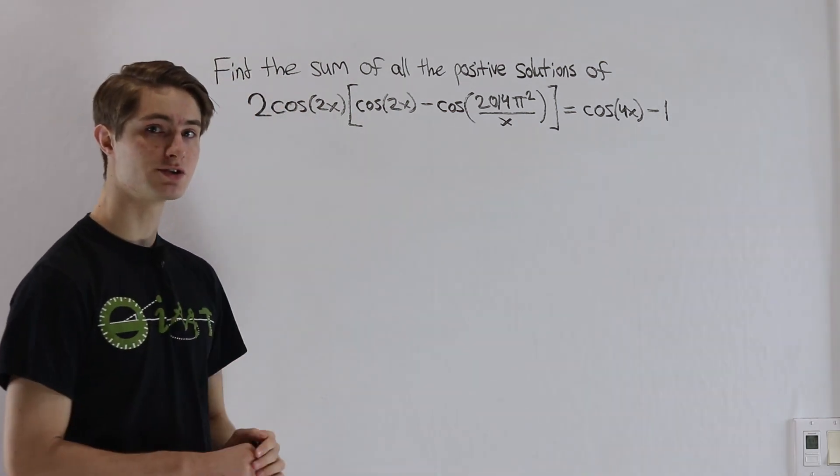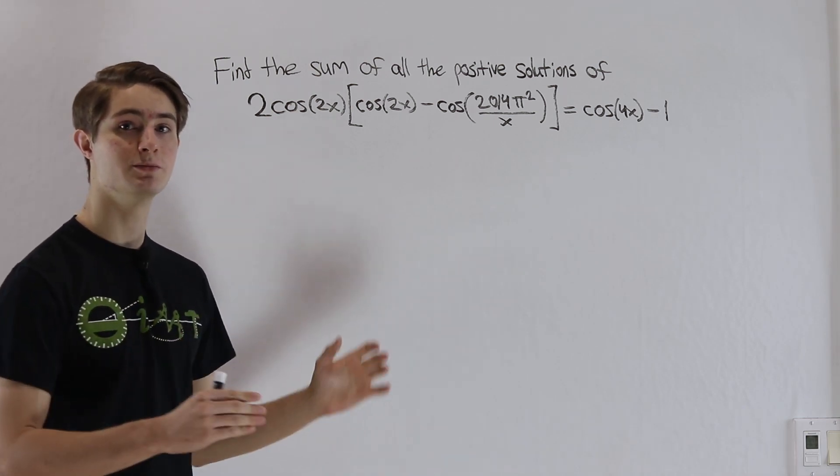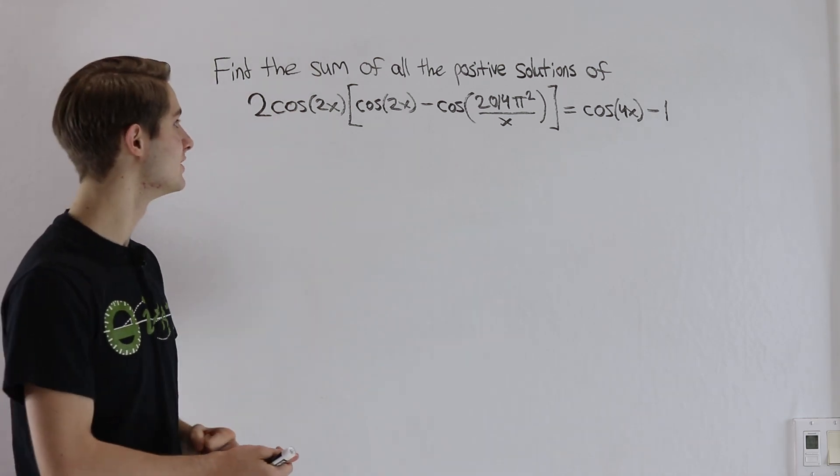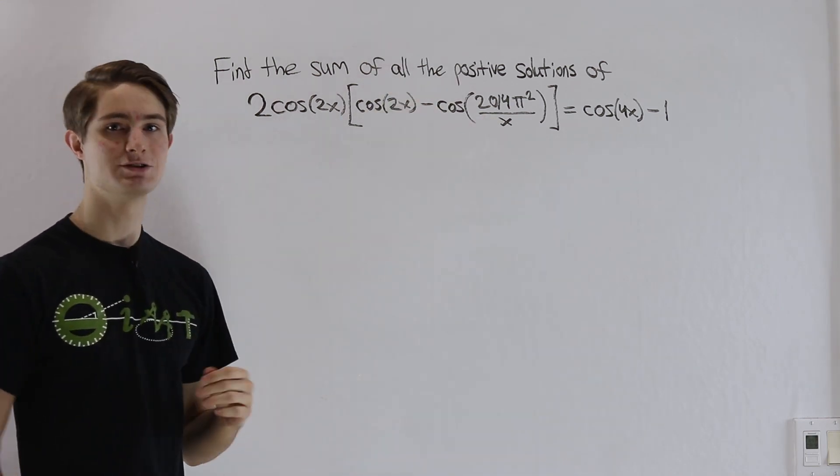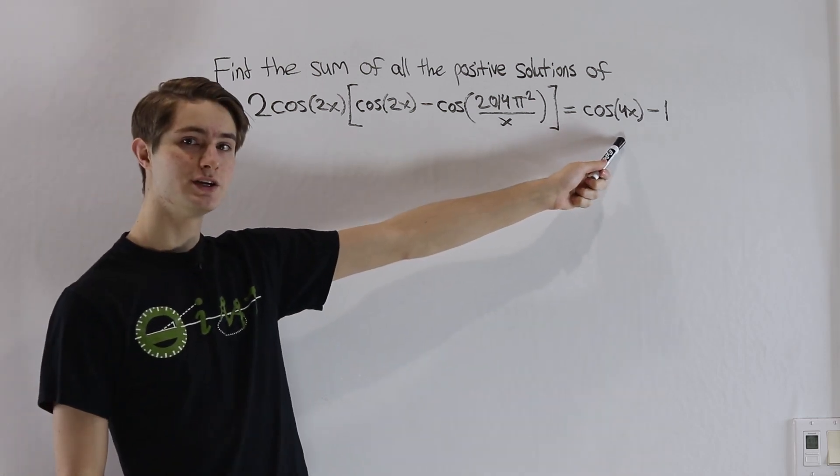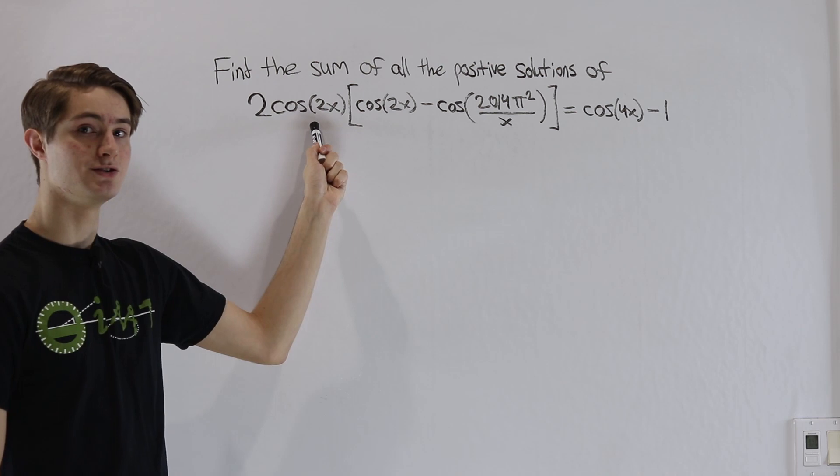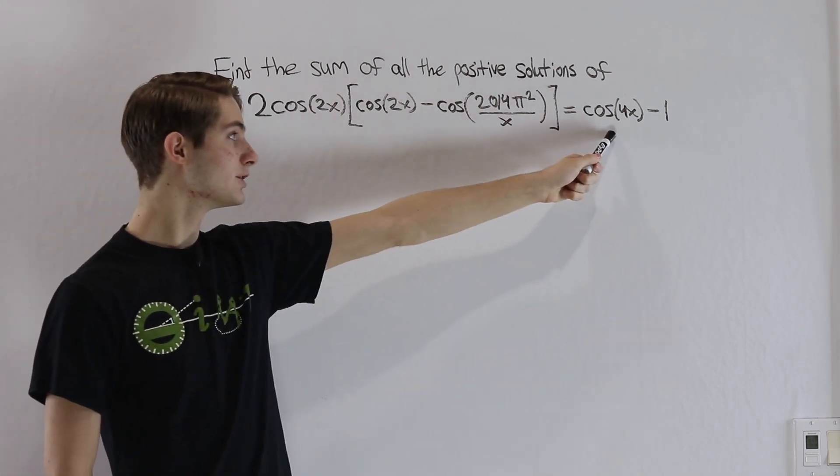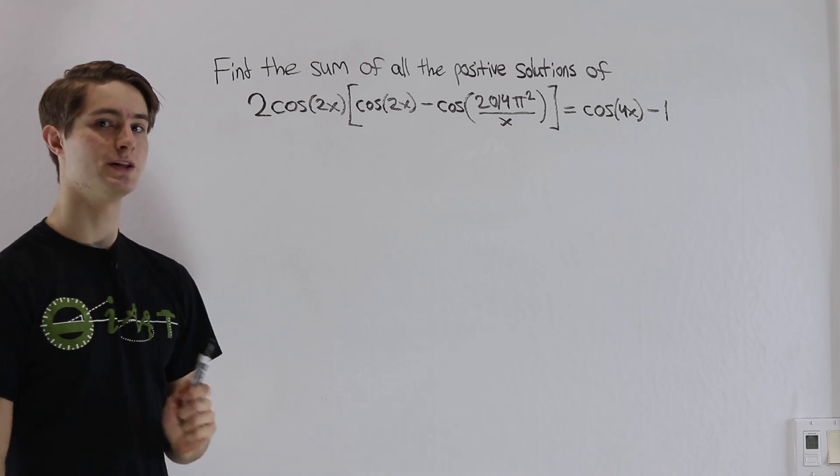When we're looking at this equation, the first thing that we want to do is try to make everything in terms of the same functions. This cosine of 2014π squared over x is kind of its own thing, there's not really much we can do about that. But with this cosine of 4x, we see we already have two instances of cosine 2x. If we can write cosine 4x in terms of cosine 2x, that would make our job a lot easier.